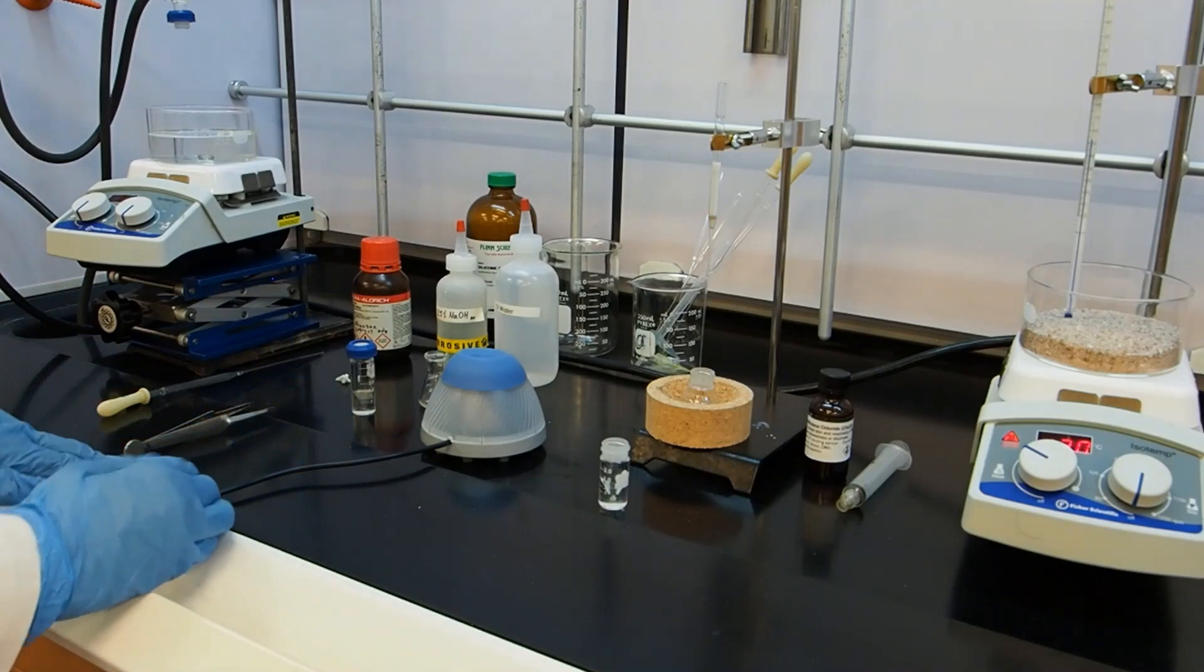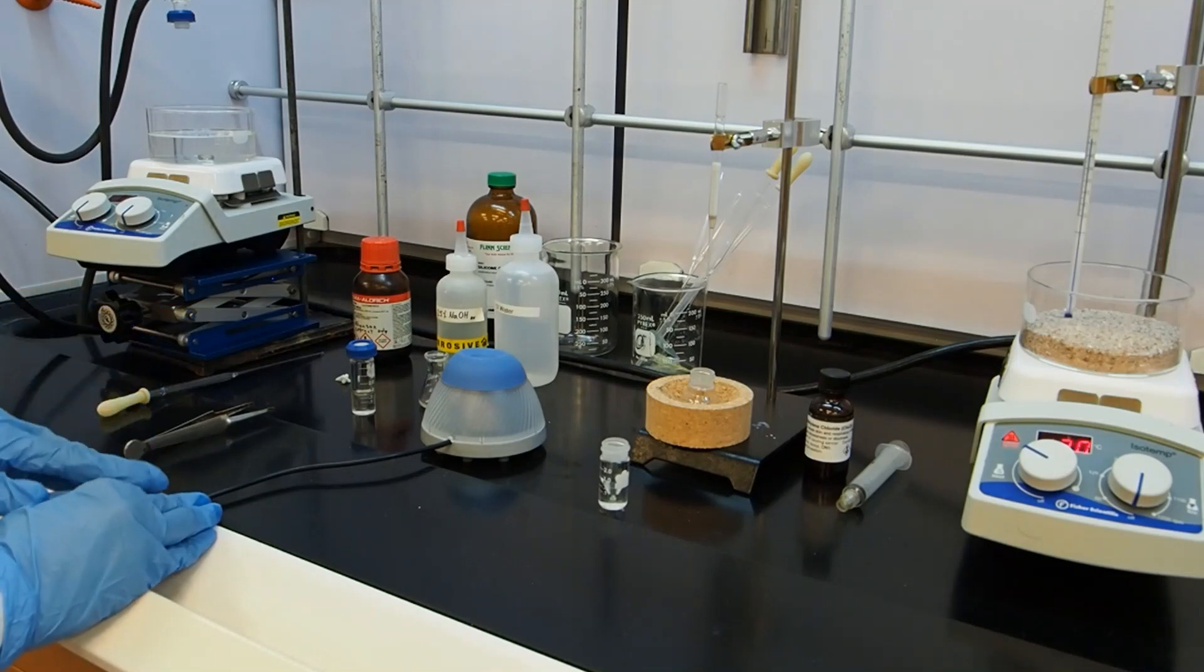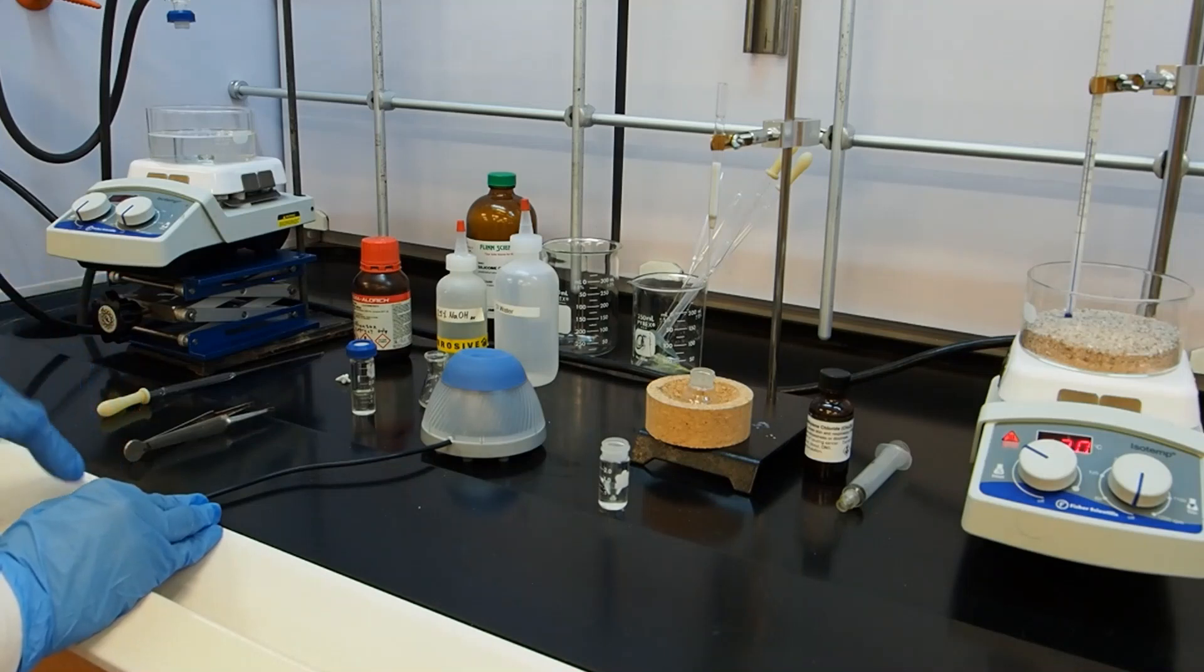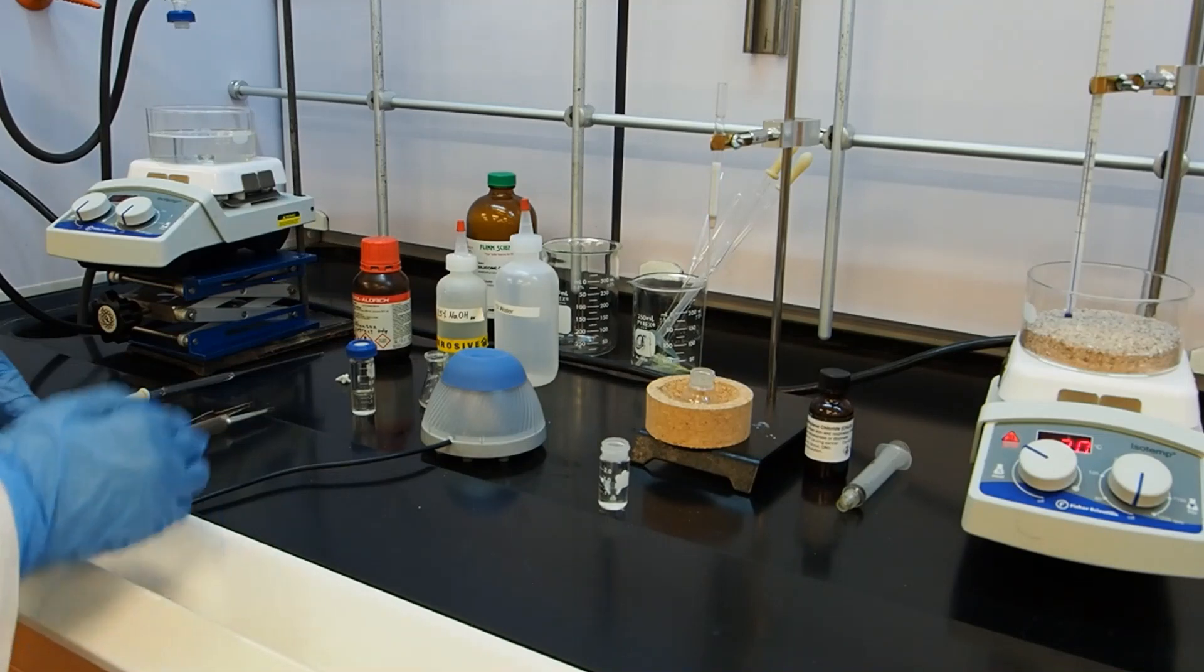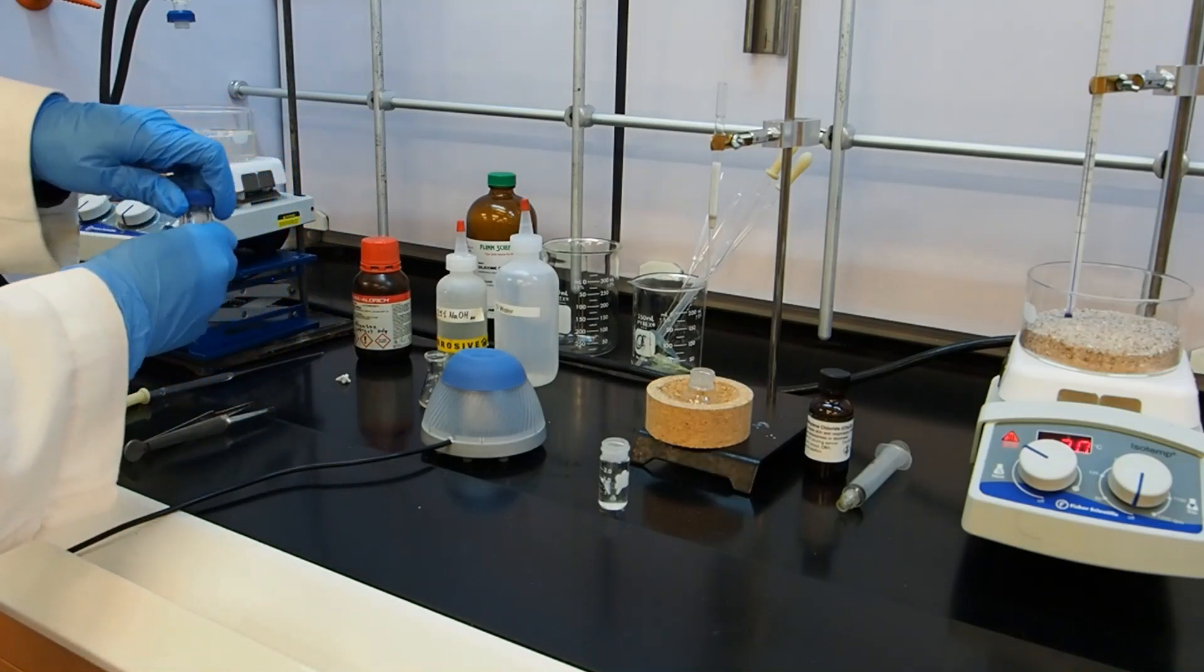So while that settles, I'll recap a little bit. We added ether to our reaction mixture to draw the product out of it. Then we added sodium hydroxide to the separated ether layer to pull the paracresol into the water layer. Once we separated those, we did one last wash with water.